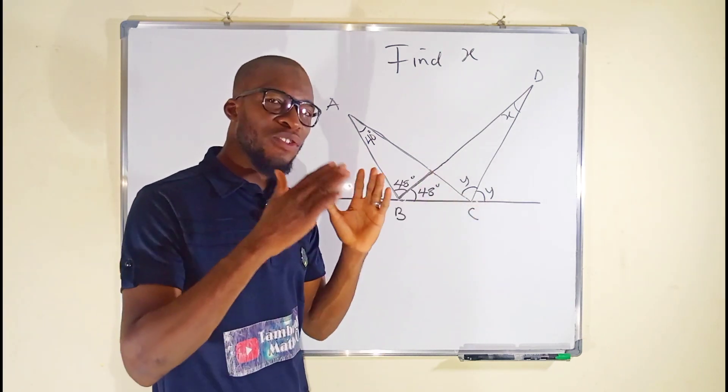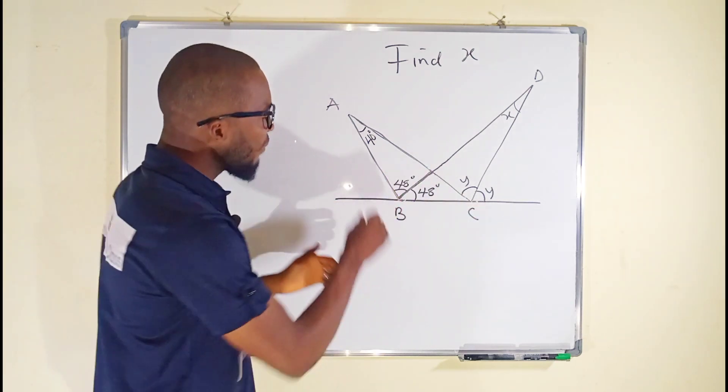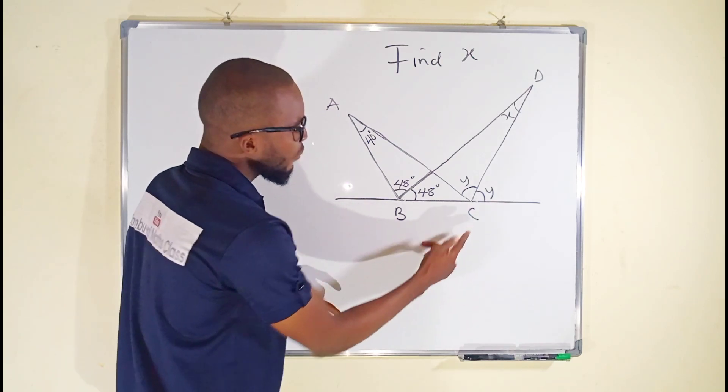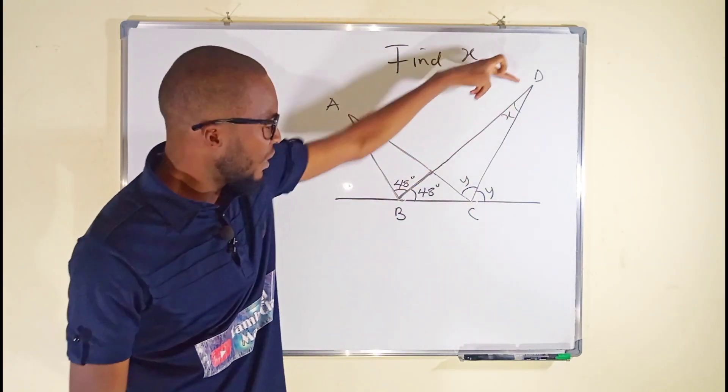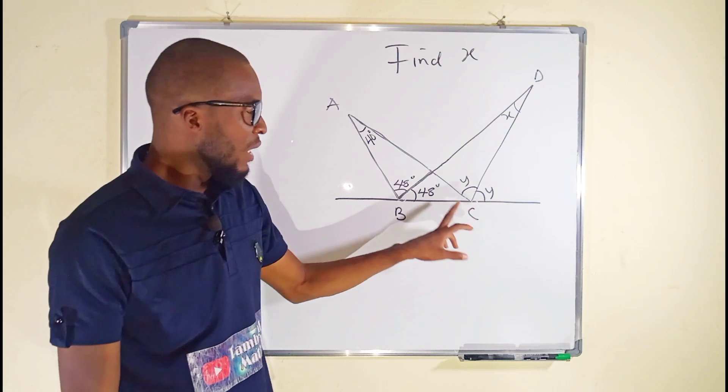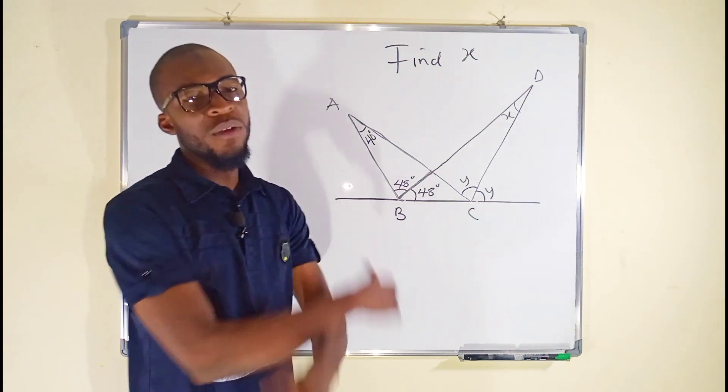We have the first triangle ABC, we have the other triangle DBC, and a smaller triangle is formed between the two triangles.